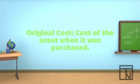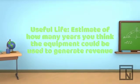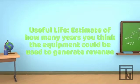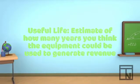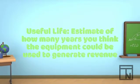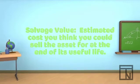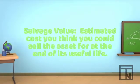The original cost is the amount you paid for the asset. The estimated useful life is an estimate of how many years you think the equipment will be used to generate revenue. This isn't the same as its physical life — this is just the number of years you think it will be useful in generating revenue. The salvage value is the estimated cost you think you could sell the asset for at the end of its useful life.